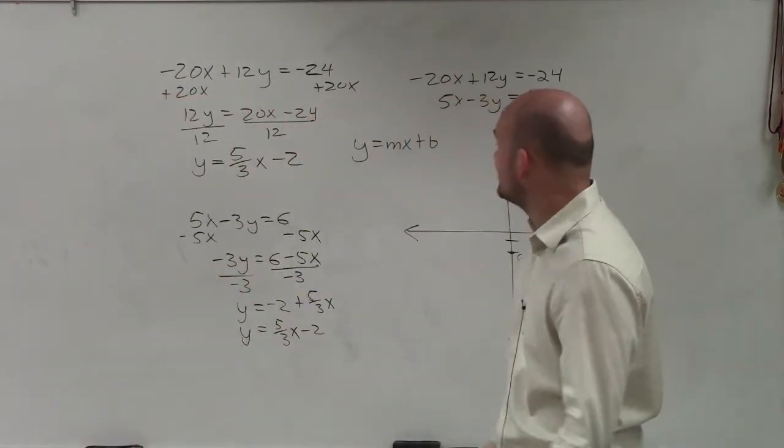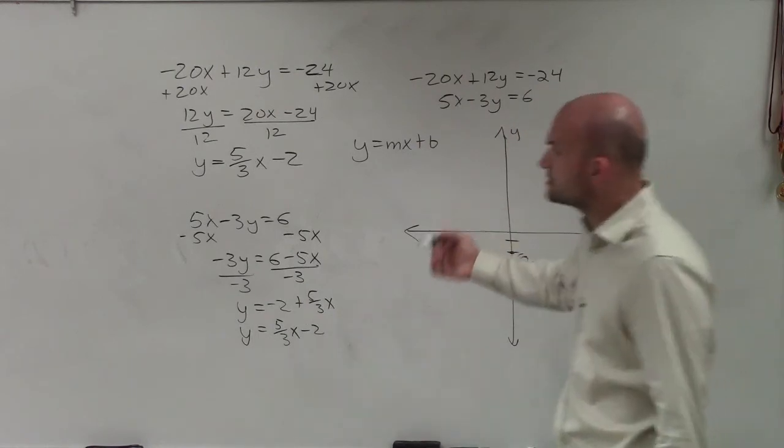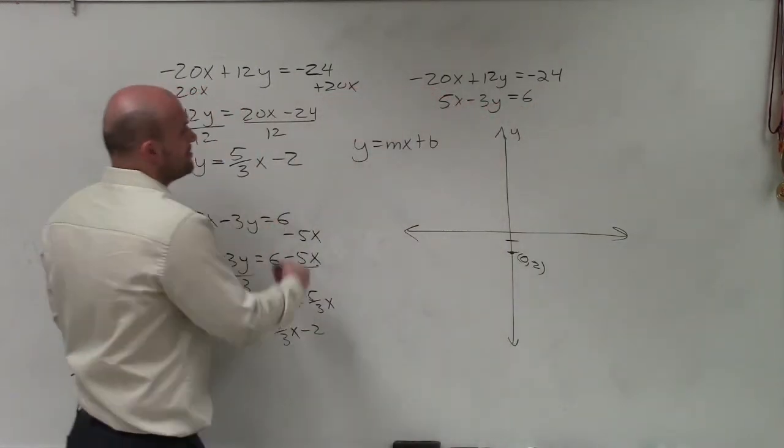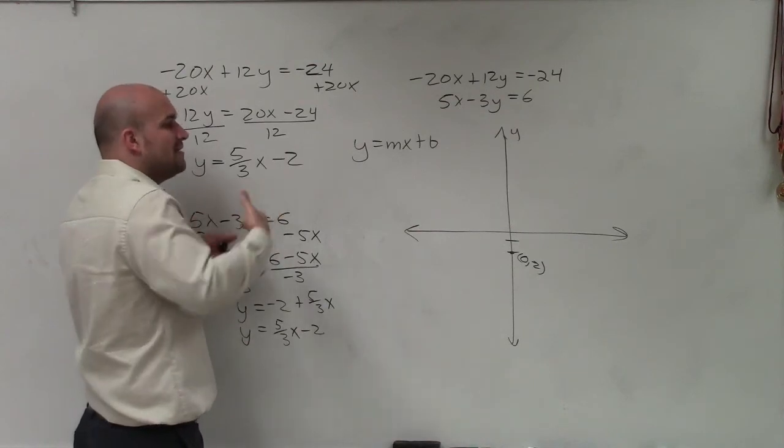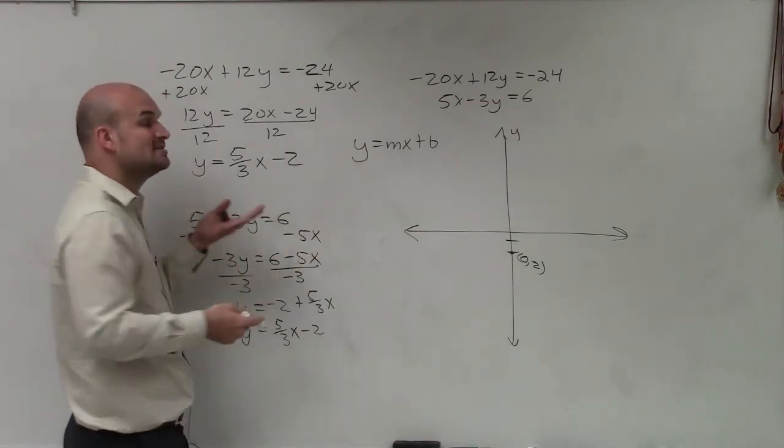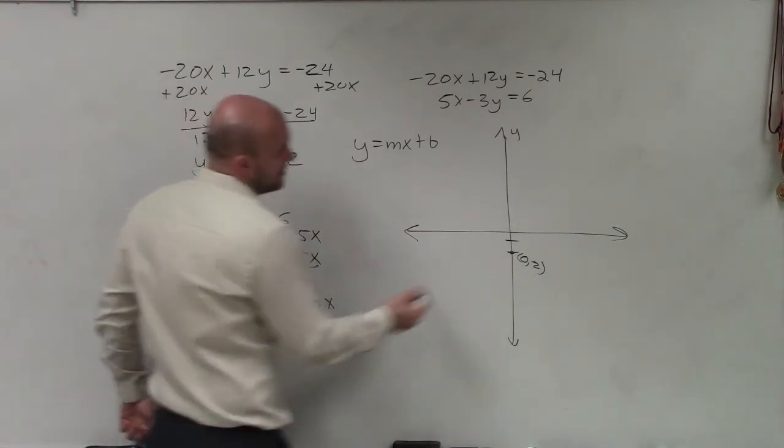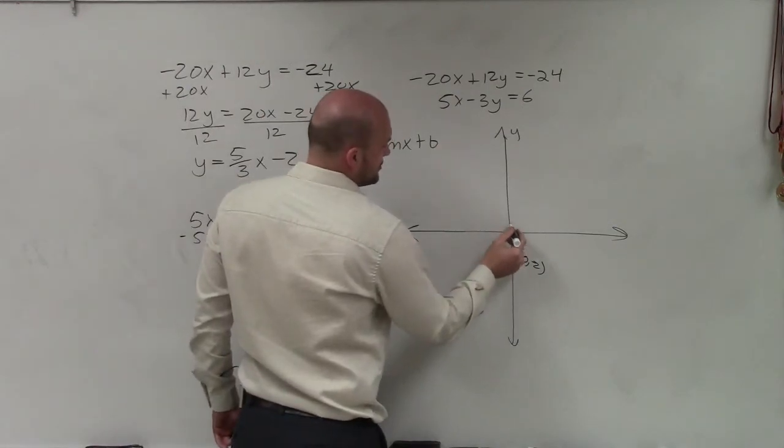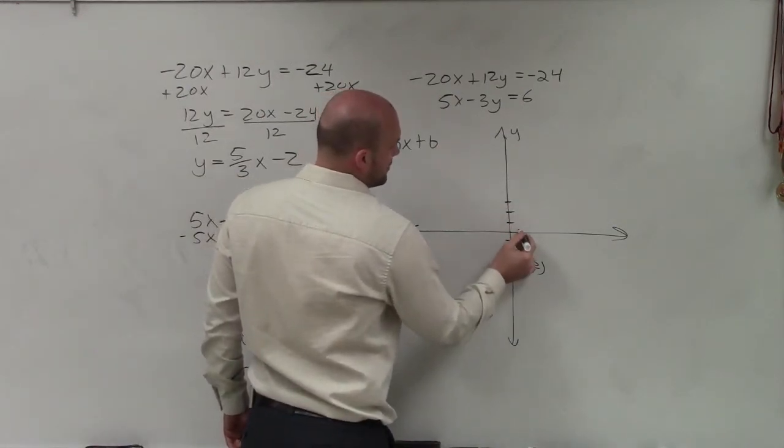So now, the next thing that we're going to do is follow the slope. And you can see the slope is 5 thirds. That's going to tell me to go up 5 and then over 3. I can also go down 5 and to the left 3. So I'll go up 5, 1, 2, 3, 4, 5, over 3, 1, 2, 3.